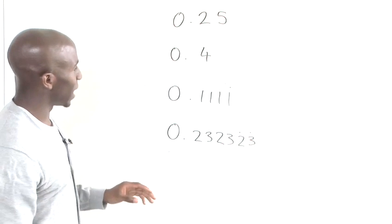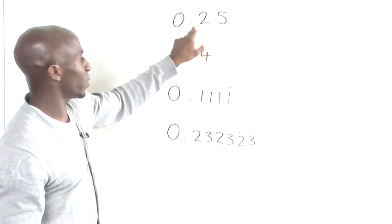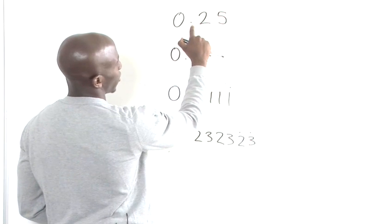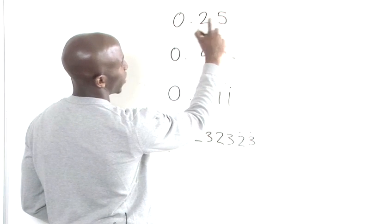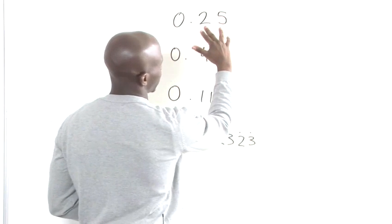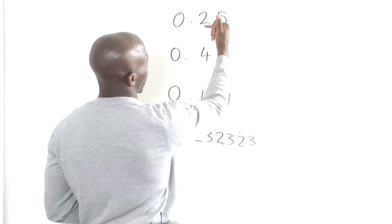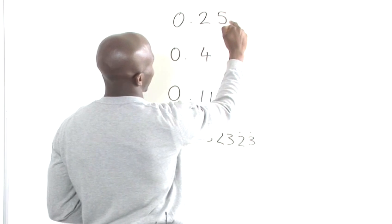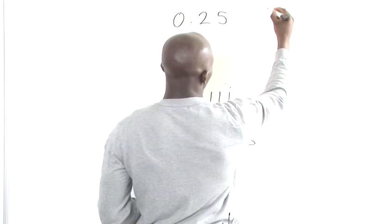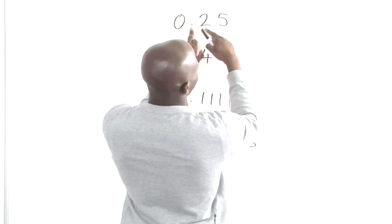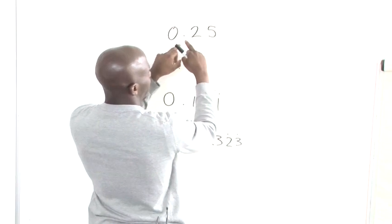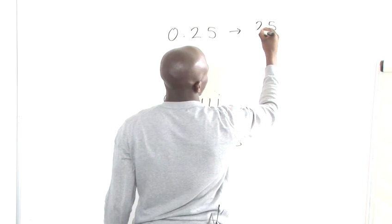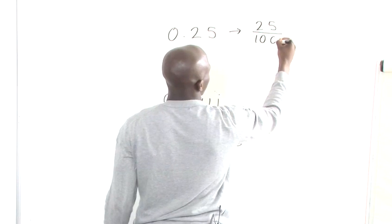So for 0.25, we have two numbers that go past the decimal point on the right hand side. The way to change this directly into a fraction is to multiply by 100. So we would get 25, meaning 25 divided by 100 gives us 0.25.